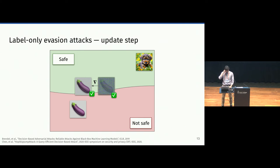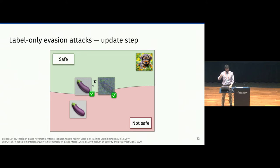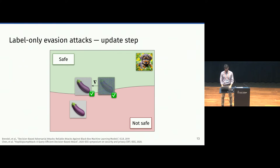Usually the way these attacks are evaluated is by counting the number of queries being issued to the model, without really caring whether the image is classified as safe or not safe — they just count this number. And attacks have gotten more and more efficient, starting from the very first one, the binary attack, all the way to hop skip jump. But what actually happens in reality is a bit different.